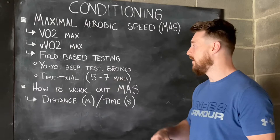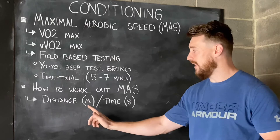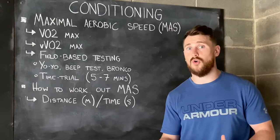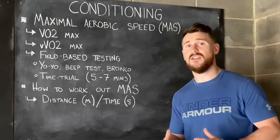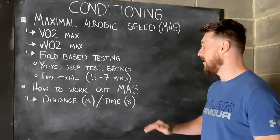Once we've done our time trial, we simply need to divide the distance that the athlete ran in metres by time in seconds only. So if we've recorded our time in minutes and seconds, we then need to convert that into raw seconds. Let's go through an example so you can see exactly how we take a time trial running test and turn it into a specific MAS score.